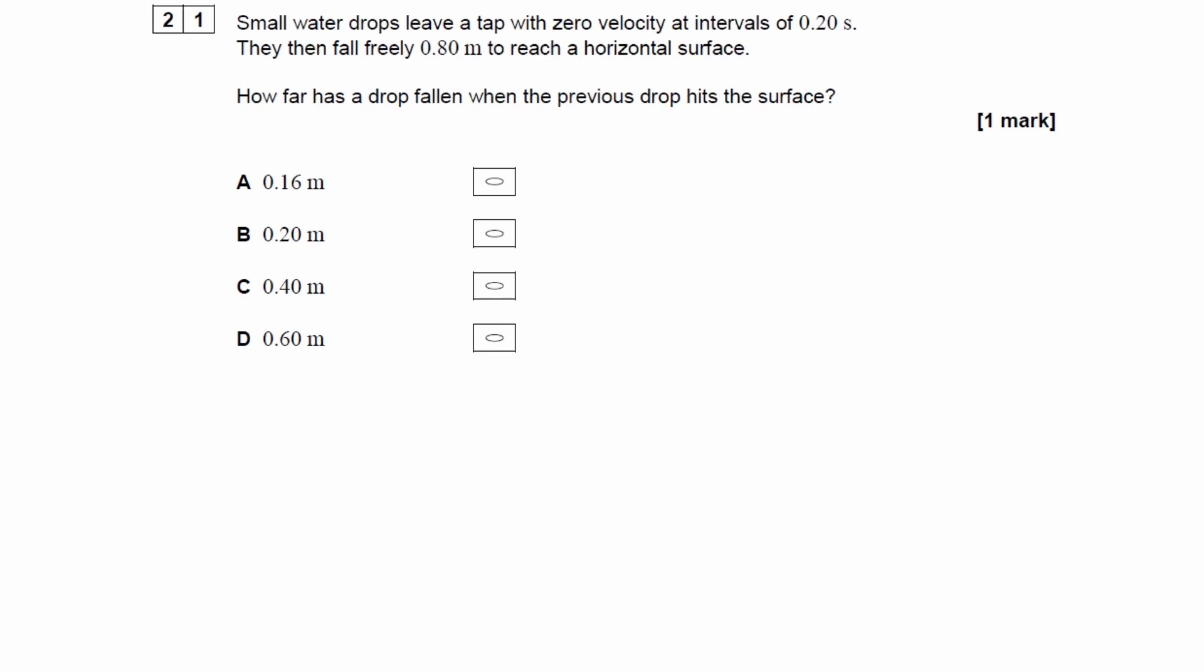So this is a tricky SUVAT question. It starts off by telling us that small water drops leave a tap with zero velocity at intervals of 0.2 seconds. They then fall freely a distance of 0.8 meters to reach a horizontal surface. We're trying to work out how far the drop falls when the previous drop hits the surface.